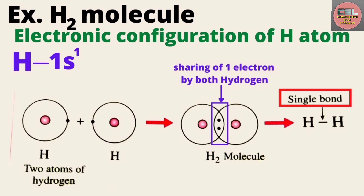When two hydrogen atoms come close to each other with electrons of opposite spin, they overlap, forming a sigma bond — that is, a single bond. Here you can see in the blue color rectangle: two hydrogen atoms, both having one electron, share them. This condition results in one single bond.